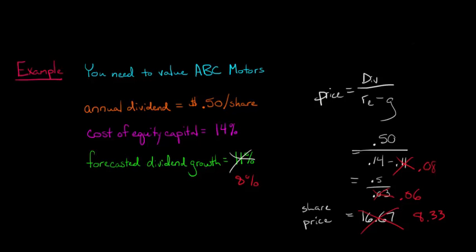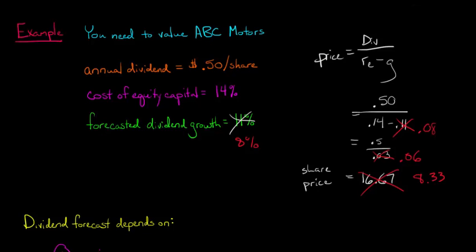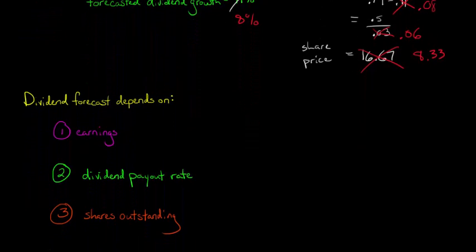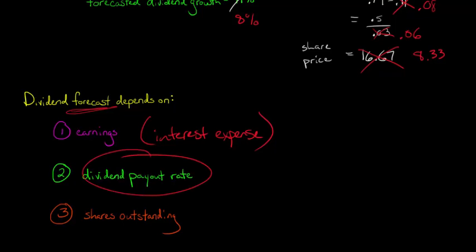But this is actually the least of our problems with the dividend discount model. We've also got several issues regarding our dividend forecast other than just making a mistake. We have to understand that this forecast is a function of earnings, which are in turn a function of interest expense. So what if the firm decides we're going to go out and get a bunch of leverage, we're going to borrow a lot. That affects interest expense, which in turn affects earnings, and that's going to affect our growth rate.